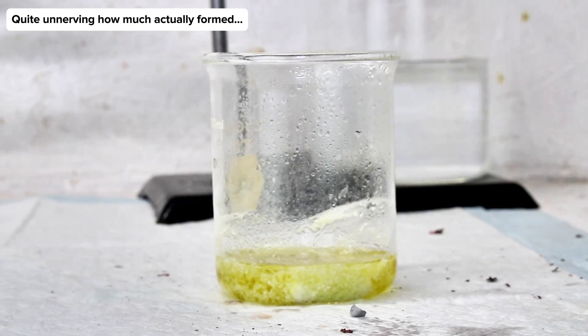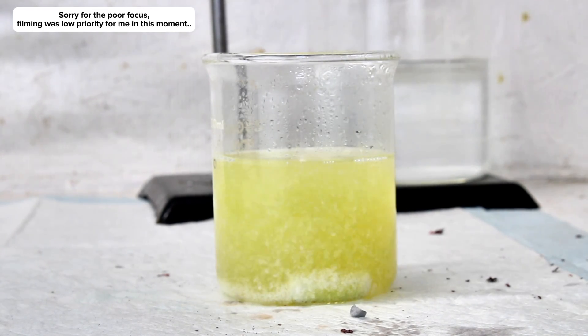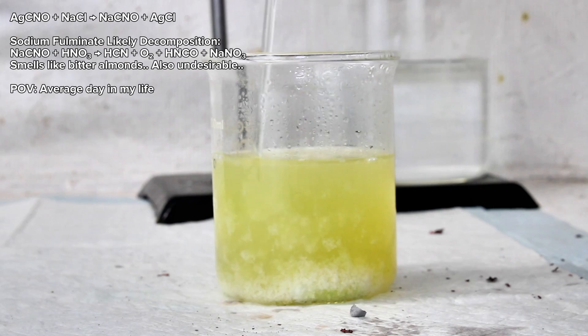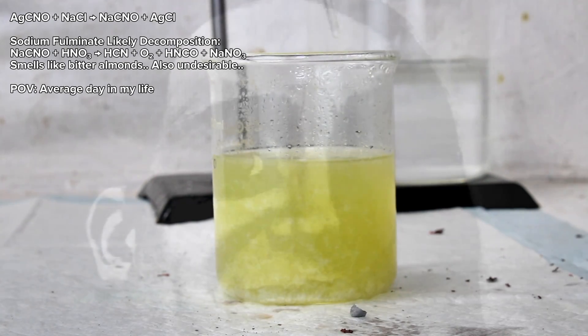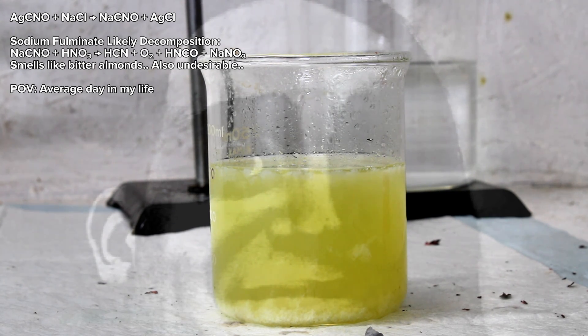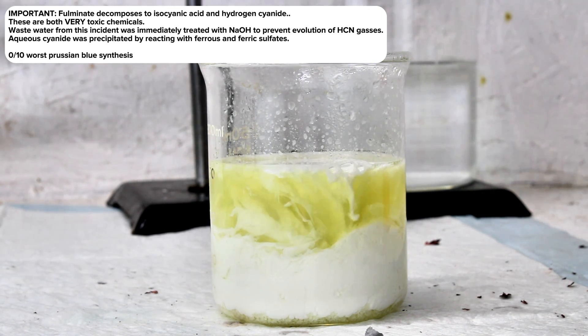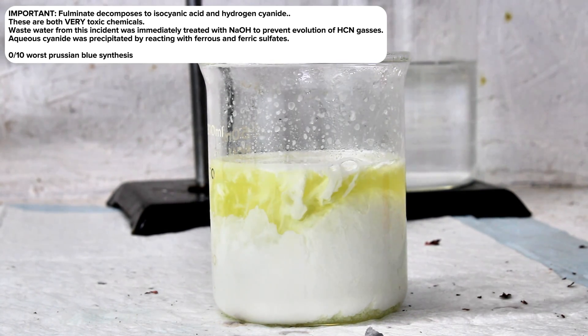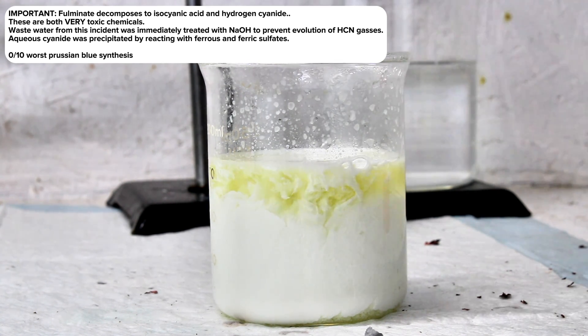What I came up with was to simply add a massive excess of saturated sodium chloride and let the two react for a while under a bit of stirring. The idea here was that silver chloride is far less soluble than silver fulminate, and so the silver fulminate would react with the sodium chloride, forming silver chloride and sodium fulminate. Soluble fulminates are extremely unstable and decompose in solution fairly quickly, leaving behind a solution that can be safely vacuum filtered to collect the silver chloride.